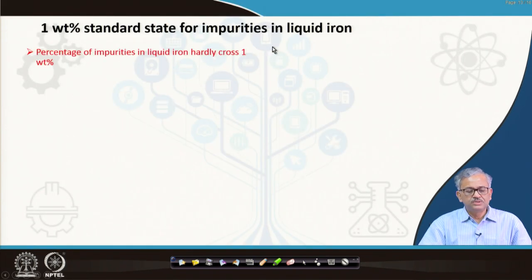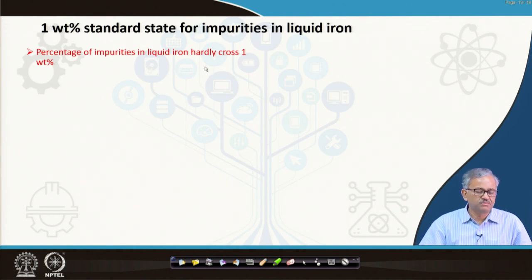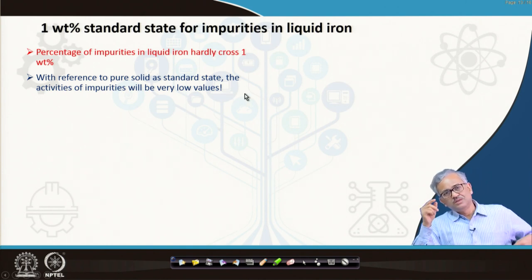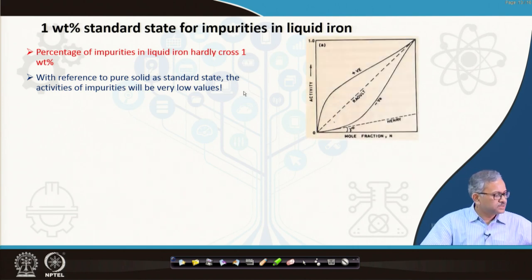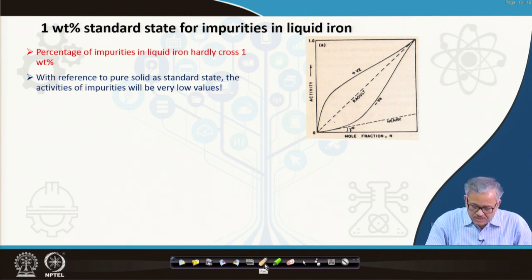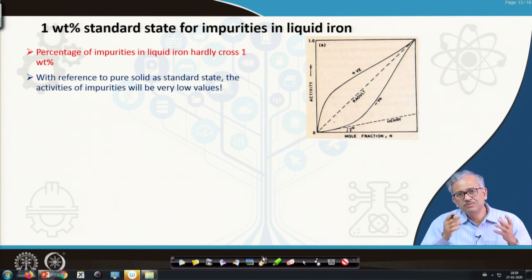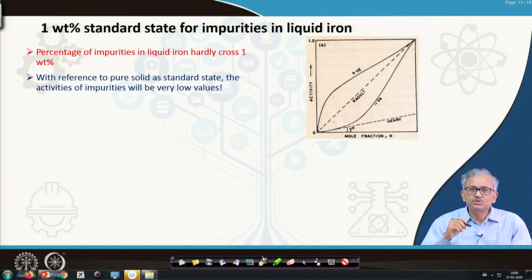In the 1 weight percent standard state of impurities in liquid iron, the percentage of impurities hardly crosses 1 weight percent; most are much less. With reference to pure solid at the standard state, the activity of the impurity will be very low — usually of the order of 10⁻³ to 10⁻⁴ — so it becomes very inconvenient. Usually, activity of impurities in liquid iron is expressed in terms of the 1 weight percent standard state.